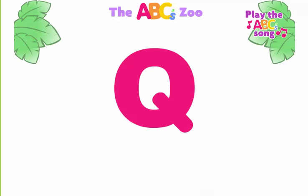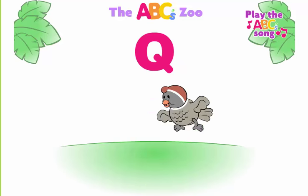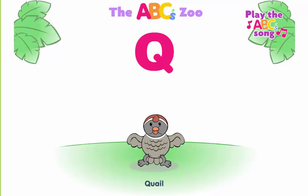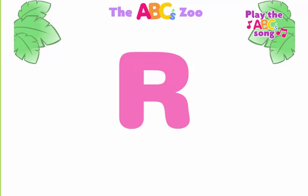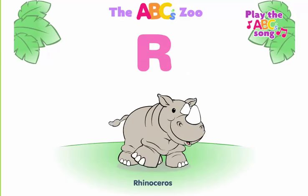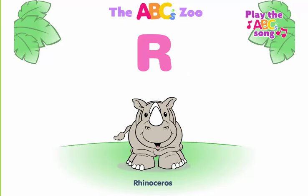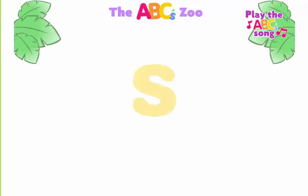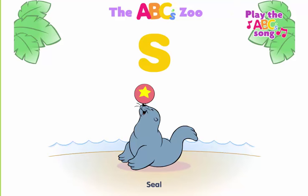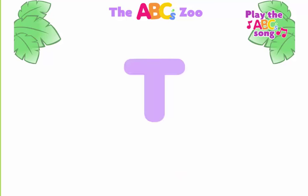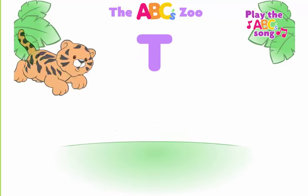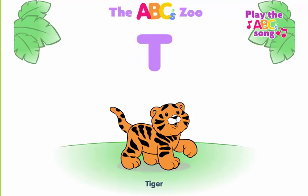Q, quail begins with Q. R, rhinoceros begins with R. S, seal begins with S. T, tiger begins with T.